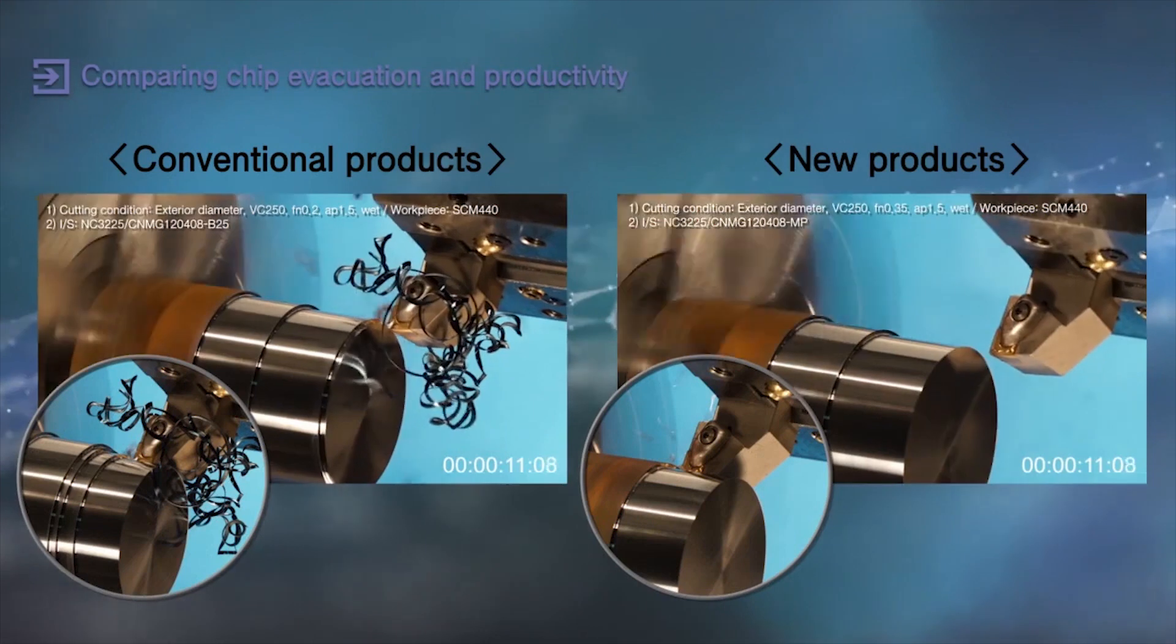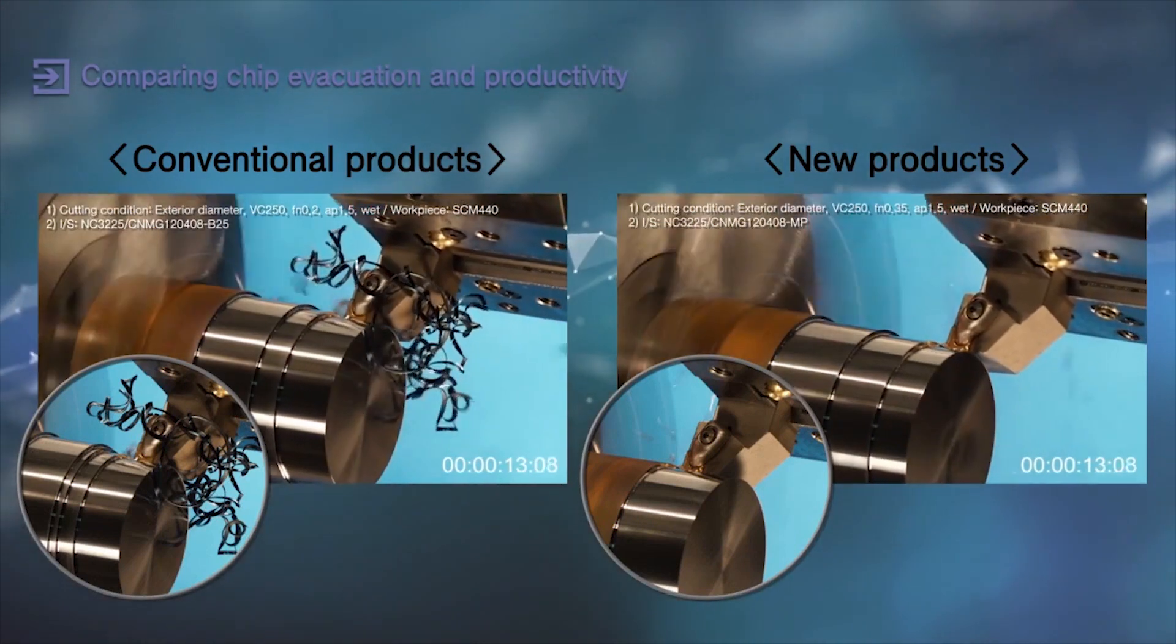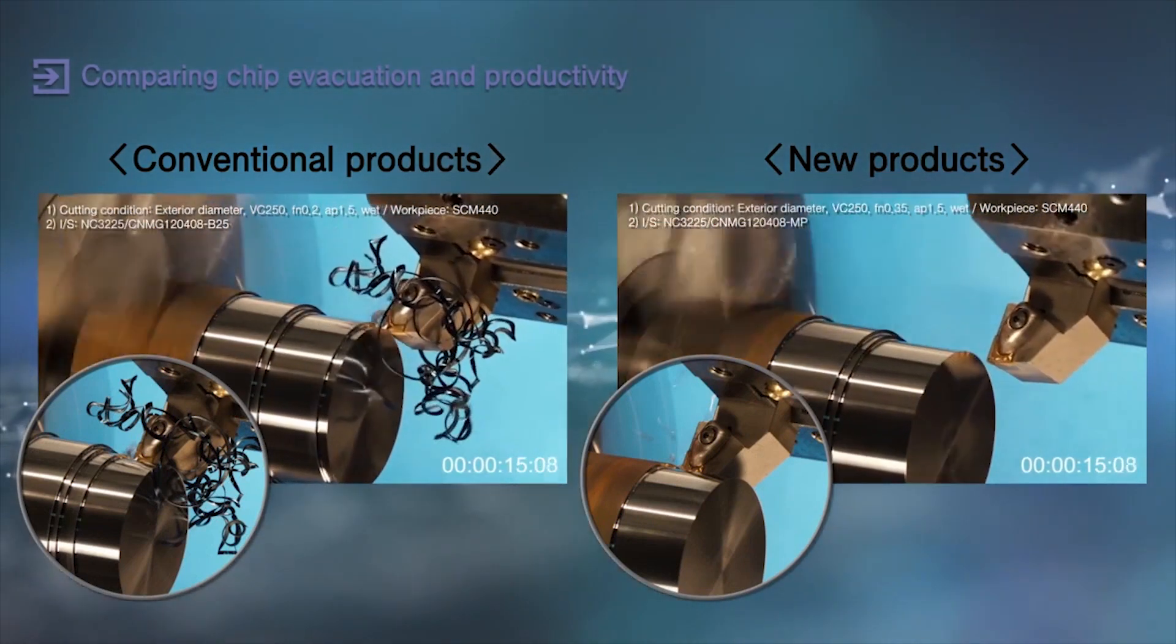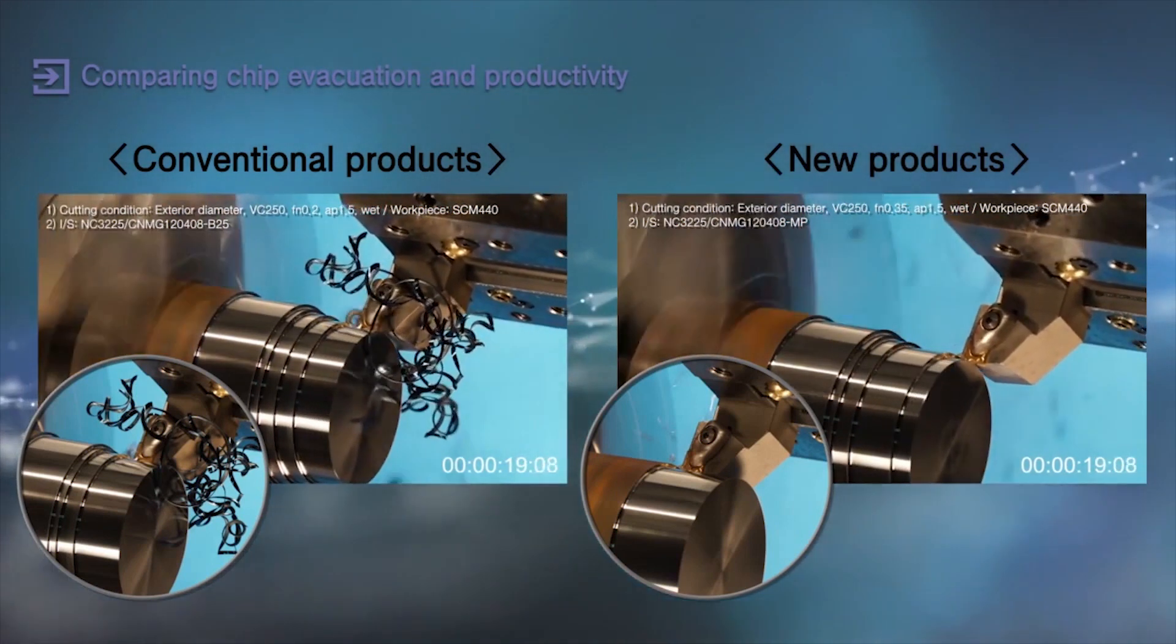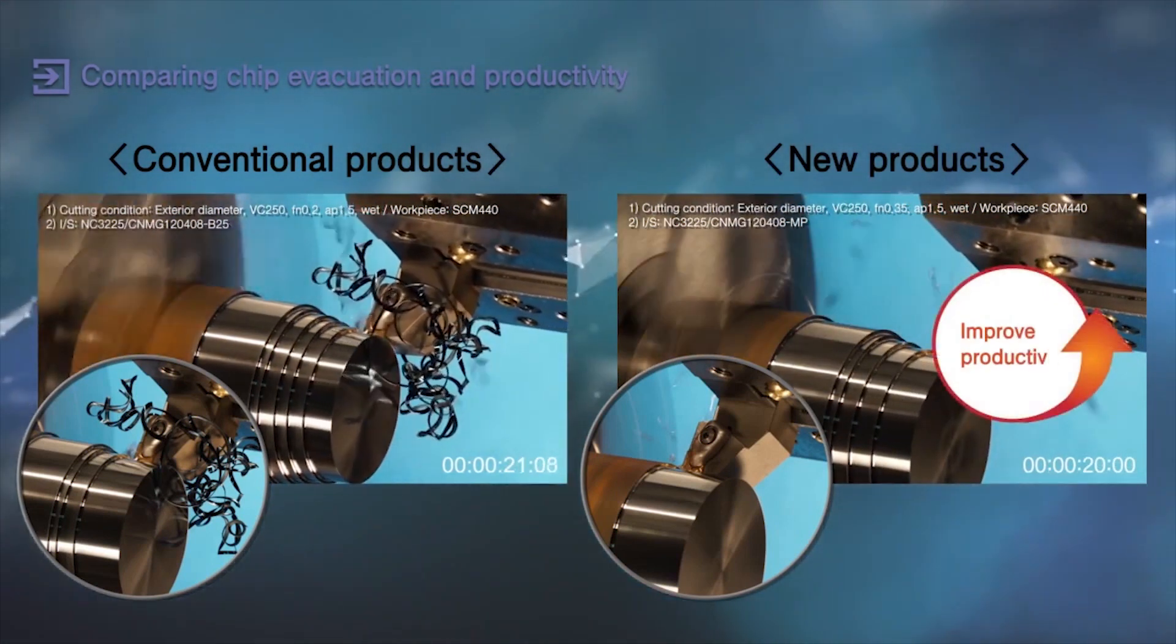The new MP chip breaker with NC3215 and NC3225, which are turning inserts for steel, will deliver high productivity and excellent chip disposability.